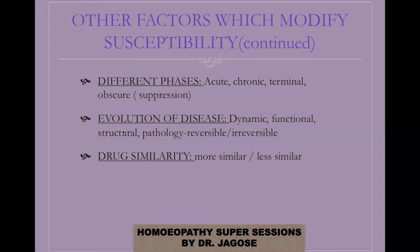The next point is evolution of the disease. The disease travels from the dynamic level to the functional level, the structural level, and the pathological level, and susceptibility also varies accordingly. At the functional level, susceptibility is generally high. As the disease advances and structural or pathological changes occur, susceptibility goes low. If the pathology is reversible, susceptibility may be high or low depending on the case; if it is irreversible pathology, susceptibility will definitely be low.